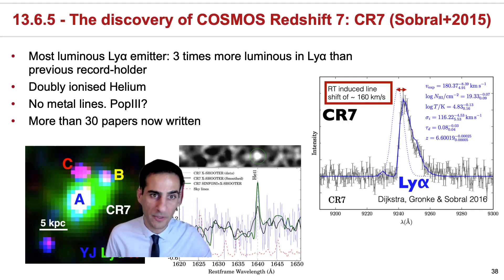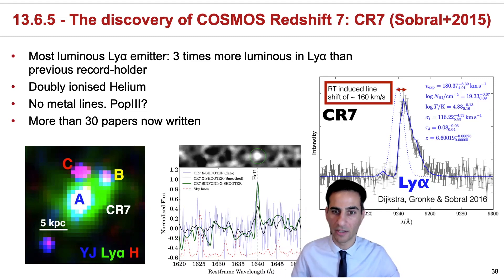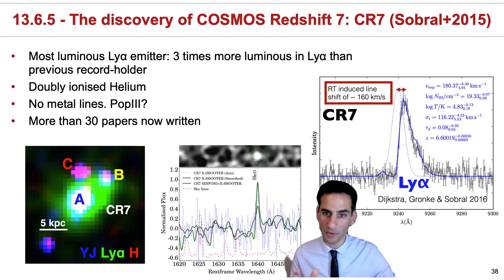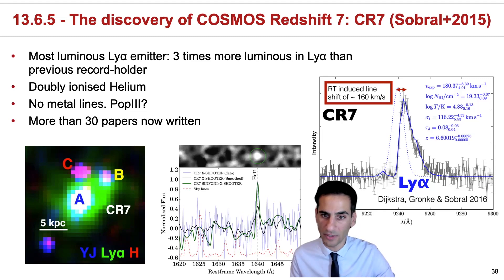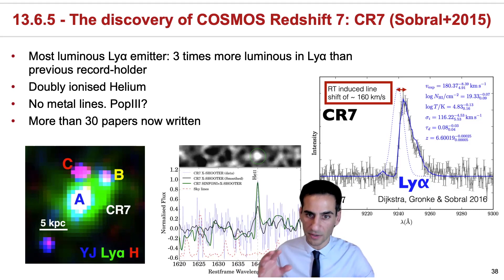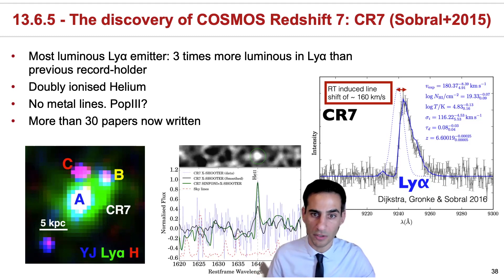Since then, a lot of papers have been written. The paper has been cited almost 300 times, and 30 different papers have been written looking at the source and arguing for and against it being Population 3 stars, or even the most exotic kind of black hole — one that forms without ever forming a star, something that people call a direct collapse black hole. With the research we've been doing over the last few years, we can now tell that the gas within the galaxy is very low in metals, but it's definitely not pristine. So it is possible that some Population 3 stars still exist in the galaxy, but the light itself is being dominated by Population 2 stars and not Population 3.